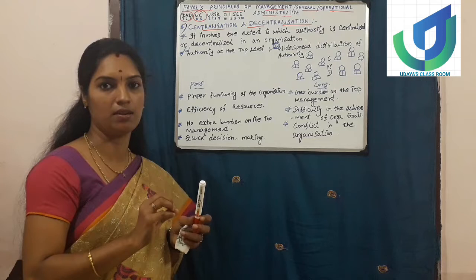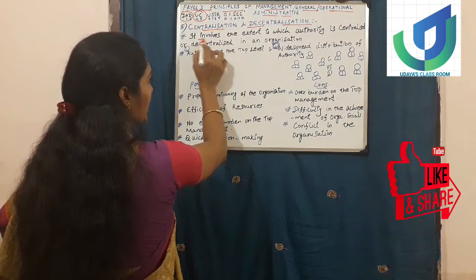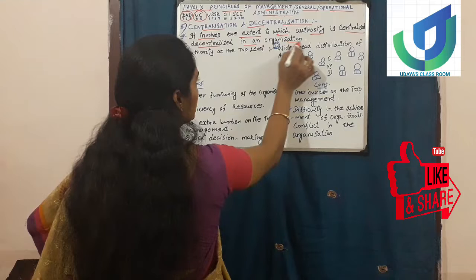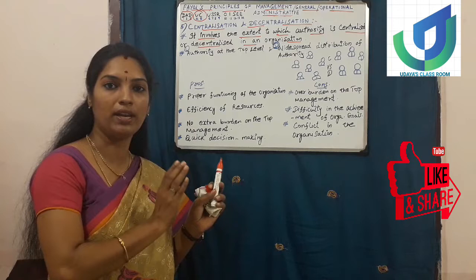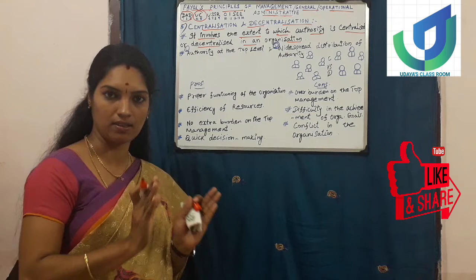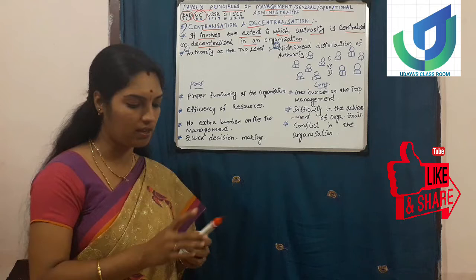What do you mean by centralization and decentralization? In a centralized company, the authority will be only with the top level management. Decentralization means the authority will be widely spread across all the levels of management. Centralization involves the extent to which authority is centralized or decentralized in an organization - that is, up to which level we can use centralization and up to which level we can use decentralization.